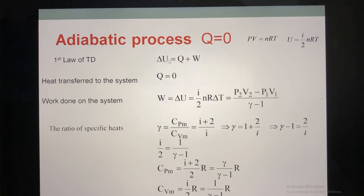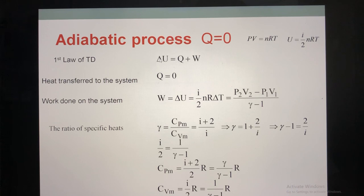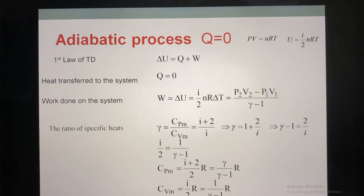We can immediately calculate the heat because the character of the adiabatic process is that heat equals zero. So here you write zero. That means the work equals the change of internal energy. We know the change of internal energy involves delta T, because n is constant and R is constant. So the change of internal energy is proportional to the change of temperature — here you write delta T.